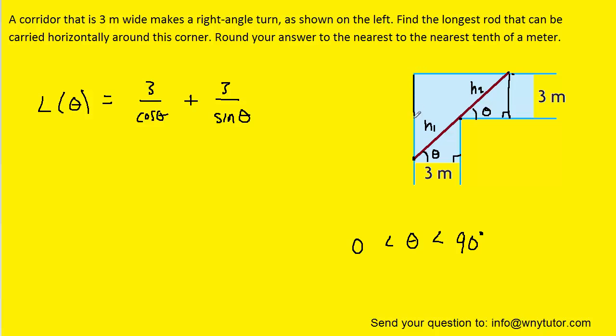At the same time, theta has to be less than 90 degrees, because if it were 90 degrees, then the rod would be lying vertically in this fashion, and once again, it would be extending infinitely down the corridor in a downward fashion. So in other words, the length of the rod tends to infinity when the angle approaches 0 degrees, and the length of the rod also tends to infinity when the angle approaches 90 degrees. And that's a key idea that we'll refer back to in just a moment.